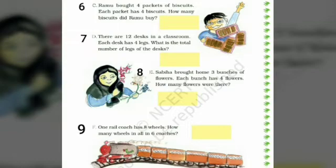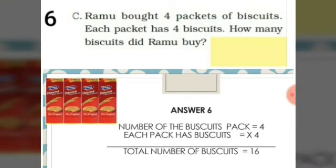Now let us solve the next 4 sums from page number 125. Ramu bought 4 packets of biscuits. Each packet has 4 biscuits. How many biscuits did Ramu buy? The number of biscuit packs is 4 and each packet has 4 biscuits. So the total number of biscuits is 4 multiplied by 4, which is equal to 16.